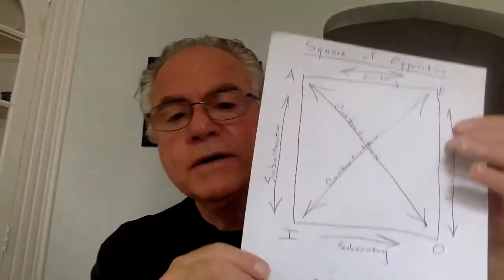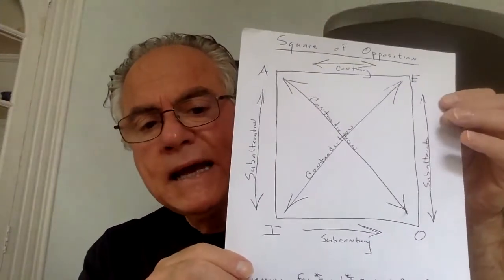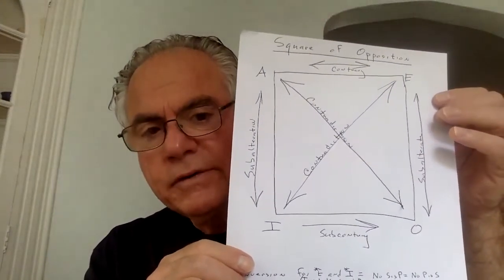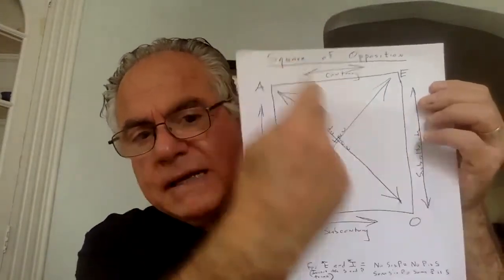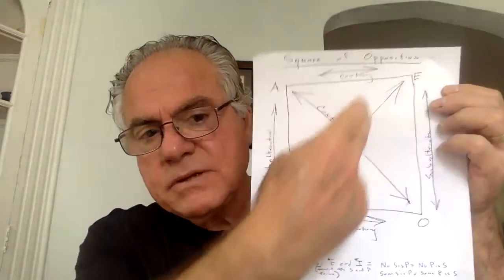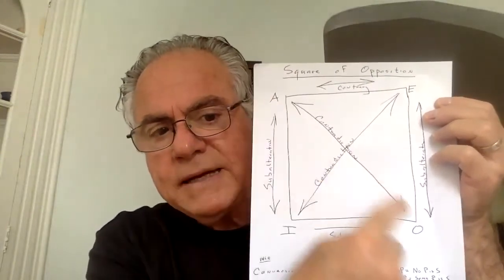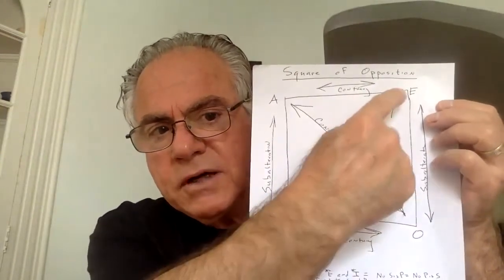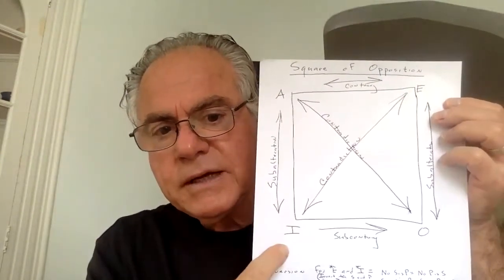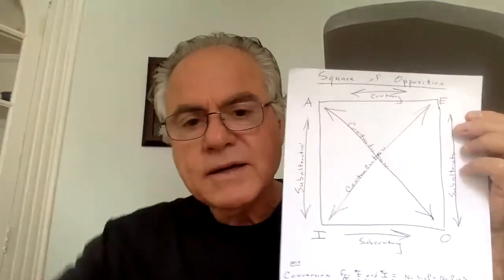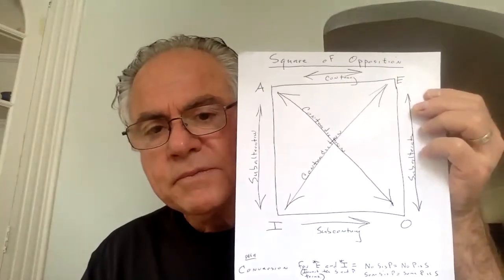Make your square, put A, E, I, and O in that order, then make an X from A to O and from E to I — right in the middle of the square. That X represents contradiction.